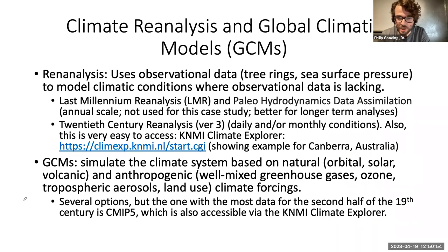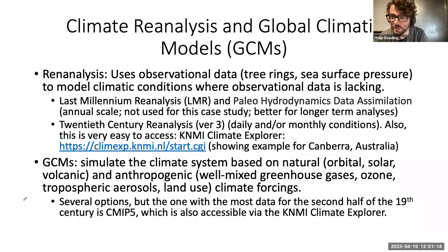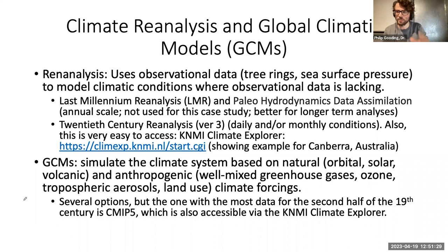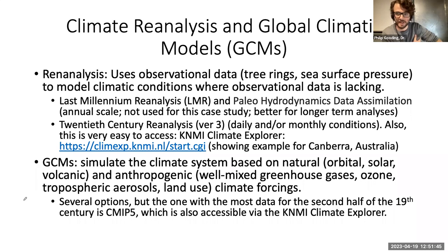Global climatic reanalysis uses observational data — things like tree rings and sea surface pressure — to model climatic conditions where observational data is lacking. There are three main products: the Last Millennium Reanalysis (LMR), the Paleoclimate Data Assimilation (PIDA), and the 20th Century Reanalysis. The LMR and PIDA are on an annual scale and intersect with the region's rainy season, making them less useful for producing a seasonal database — they're better for longer-term analyses and earlier periods before 1856.